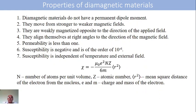Coming to the properties of diamagnetic materials. First property: they do not have permanent dipole moment. The dipole moment is zero — they do not have permanent dipole moment.